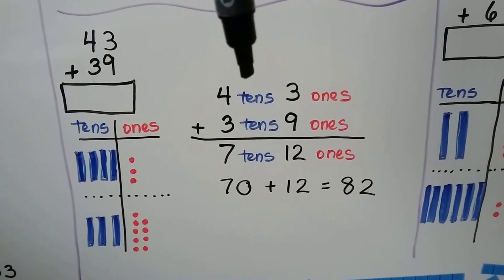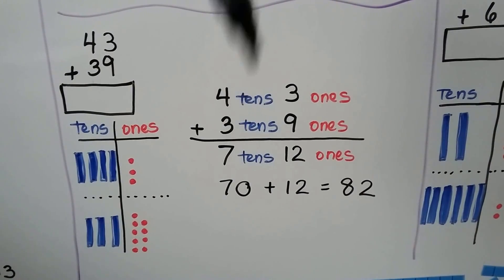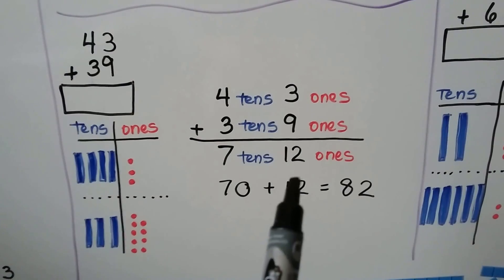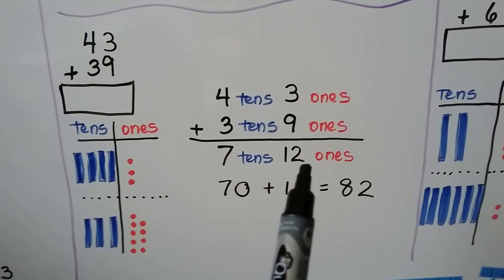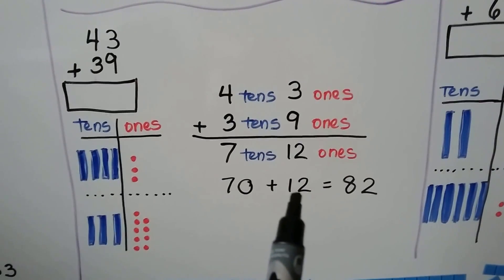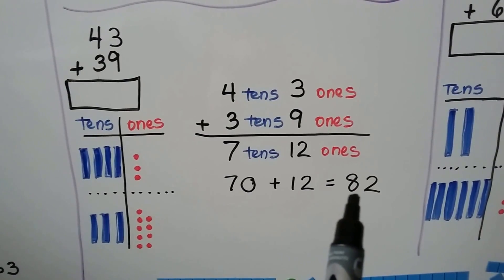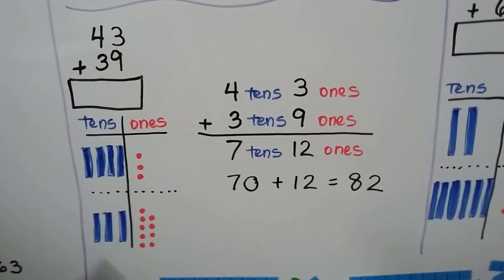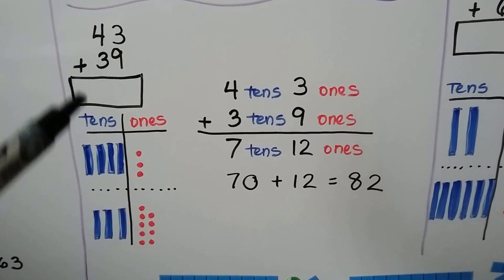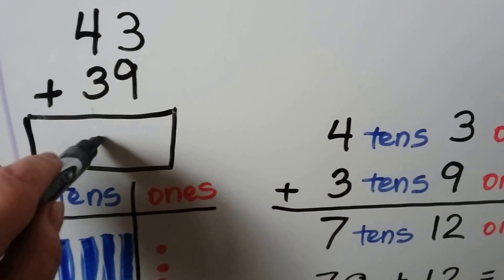We add the tens: 4 plus 3 is 7. We have seven tens and 12 ones. That's 70 plus 12 more, which is equal to 82. So 43 plus 39 is equal to 82.